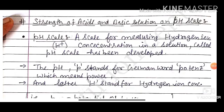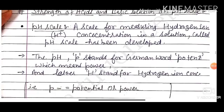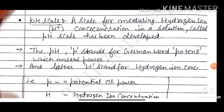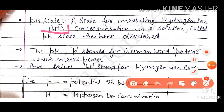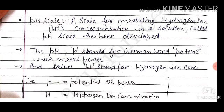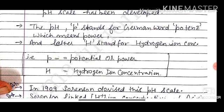Strength of acids and basic solutions on the pH scale. First of all, what is a pH scale? A scale for measuring hydrogen ion concentration in a solution is called pH scale. In the pH scale, P stands for the German word 'potenz' which means power or potency, and the letter H stands for the hydrogen ion concentration.